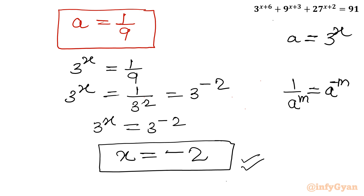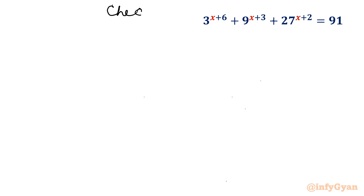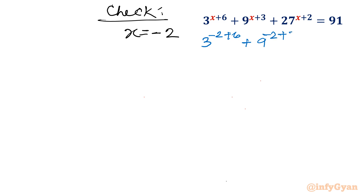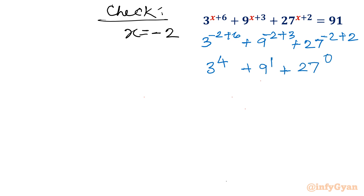Let us verify this by checking x = −2 in the original equation. Putting x = −2: 3^(−2+6) + 9^(−2+3) + 27^(−2+2) = 3^4 + 9^1 + 27^0 = 81 + 9 + 1 = 91, which equals our RHS. Hence this value is verified.